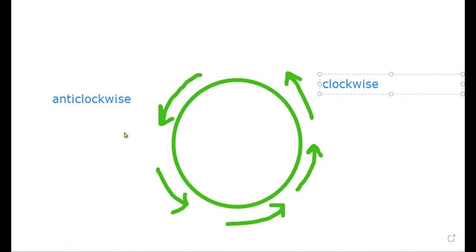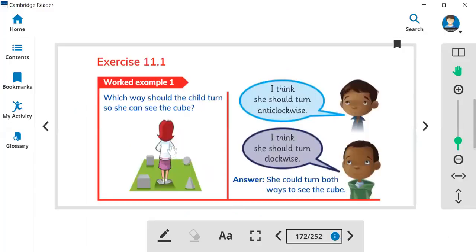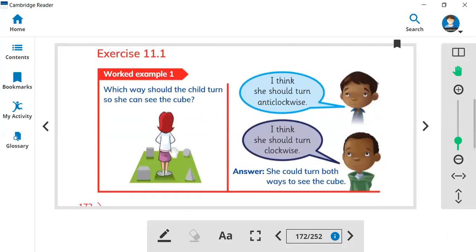Now let's look at this example. There is a child standing between different shapes: a sphere, like a football, a cone, a cylinder, and a cube — four shapes. Which way should the child turn so she can see the cube? Clockwise or anticlockwise?